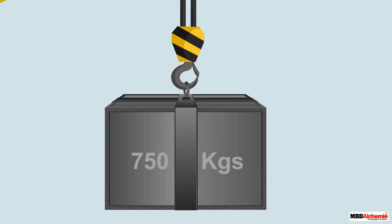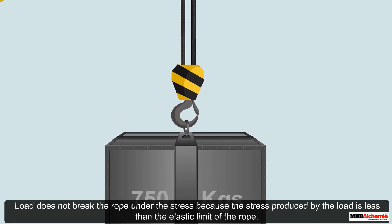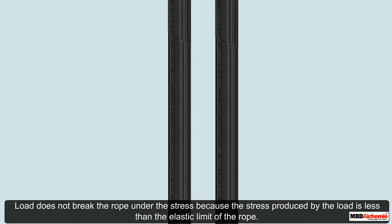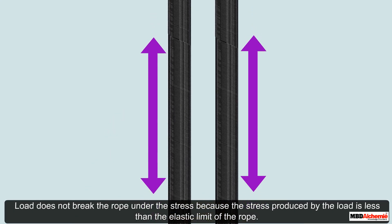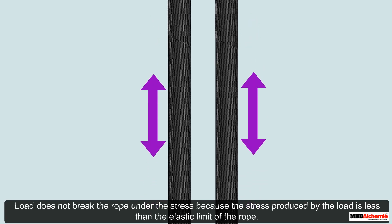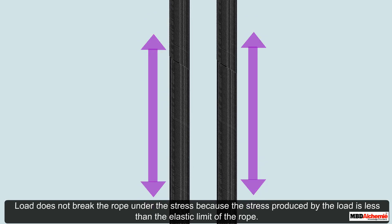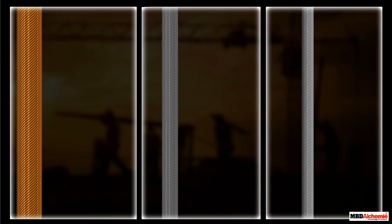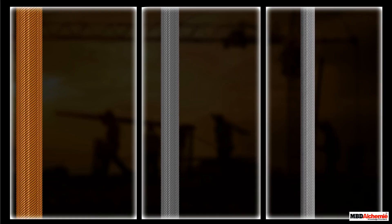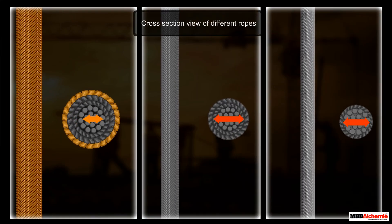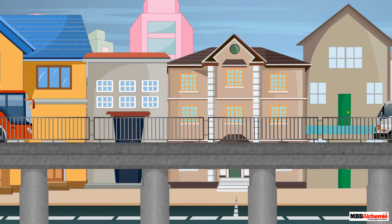The attached load does not break the rope under stress because the stress produced by the load is less than the elastic limit of the rope. Cranes are designed to reduce stress by varying the diameter of the rope as per the elastic limit of the material.